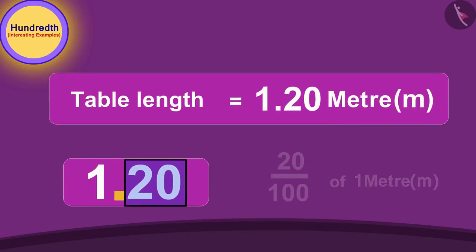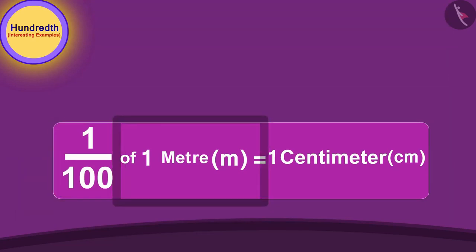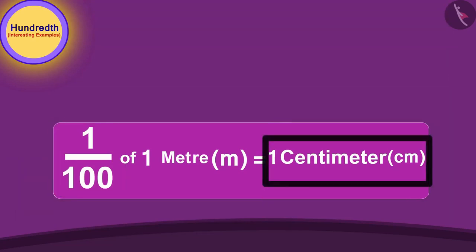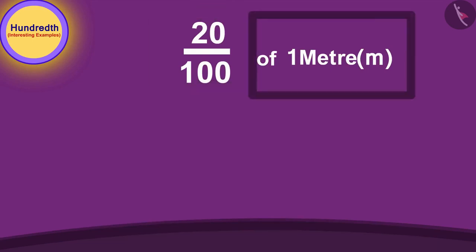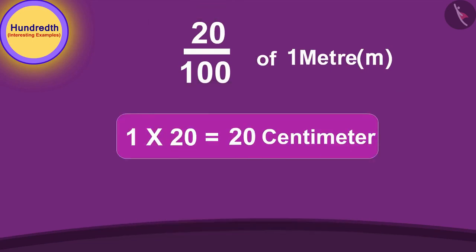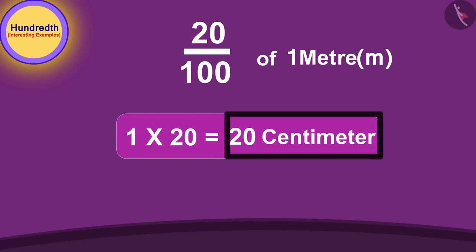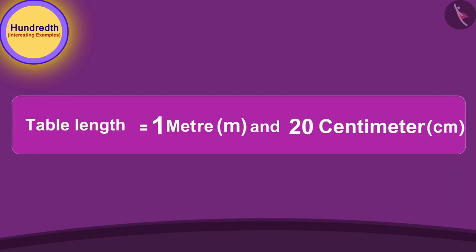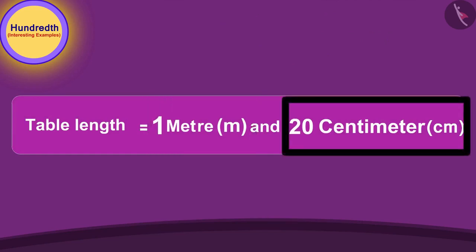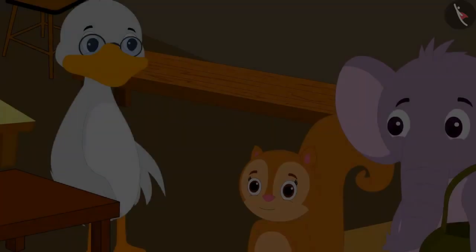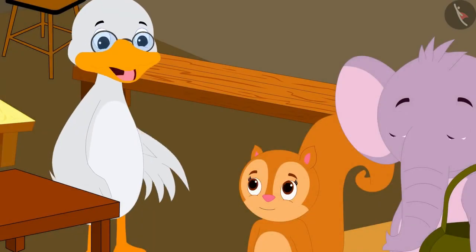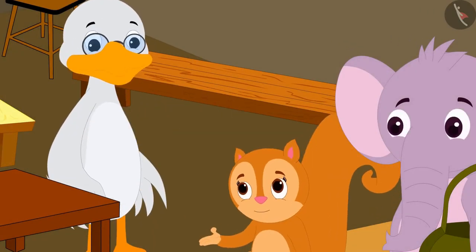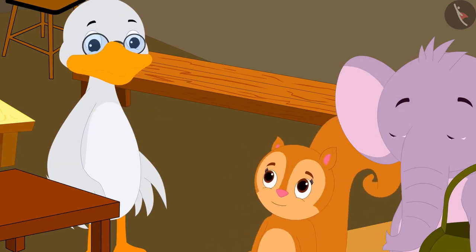20, or 20 hundredths of a meter, is written after the decimal. Because 1 hundredth part of a meter is equal to 1 centimeter, 20 hundredths of a meter will be equal to 1 times 20, or 20 centimeters. So, the length of this table will be 1 meter and 20 centimeters. Well done, Chanda. You learned very quickly. Uncle said to Chanda.